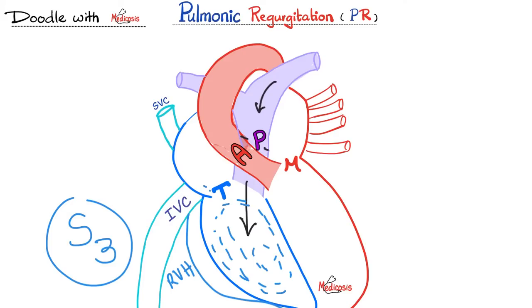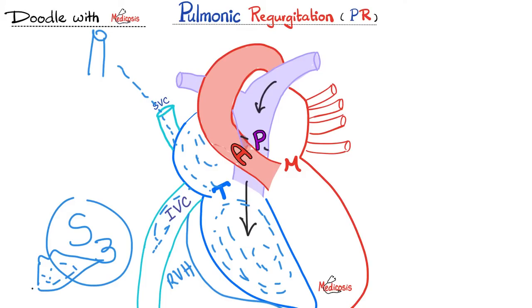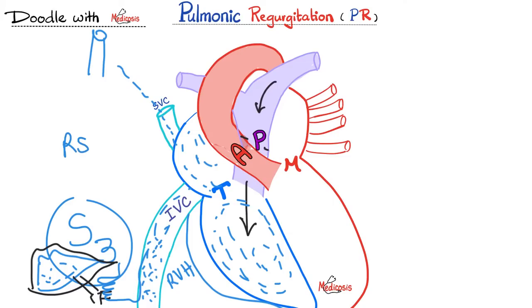Blood overwhelms the right ventricle, then overwhelms the right atrium, then the superior vena cava and jugular veins. It also overwhelms the inferior vena cava, leading to hepatomegaly with painful distension of the hepatic capsule of Glisson, then ascites and splenomegaly. This congestion also leads to bilateral pitting edema in the lower extremities. These symptoms mirror right-sided heart failure: swelling upstairs — jugular venous distension; swelling downstairs — bilateral pitting edema; and swelling in the middle — hepatomegaly and ascites.